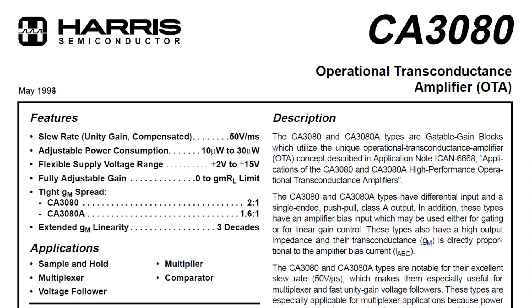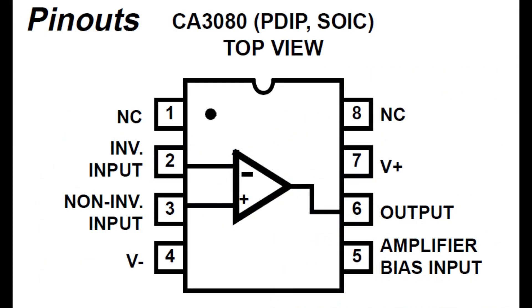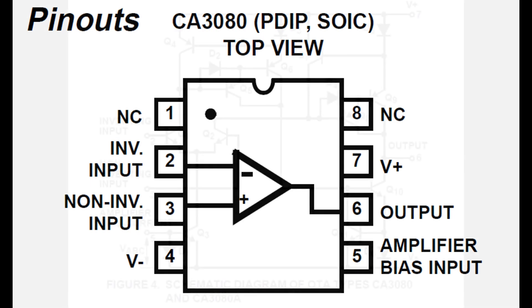All right, so here's the pinout. You might say, oh, that's just an op amp. Input, positive, negative, plus or minus rails. It doesn't have an offset current adjustment, so pins 1 and 8 are open. The only difference is pin 5, which says Amplifier Bias Input. What is that?